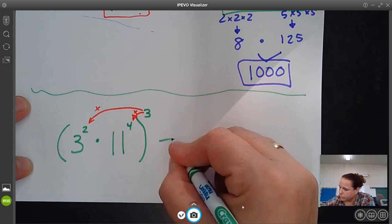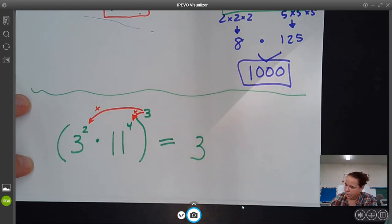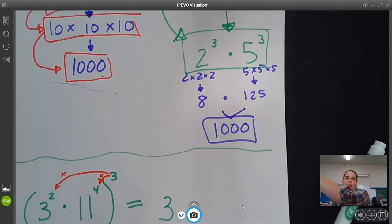What you're going to have is 3, and then your exponent is...